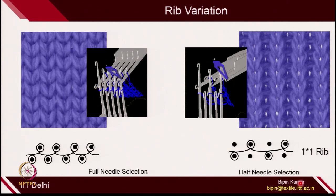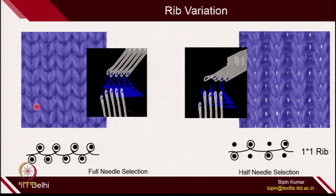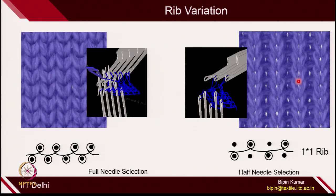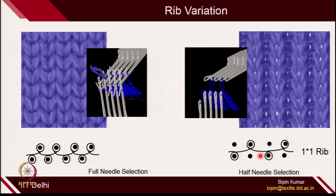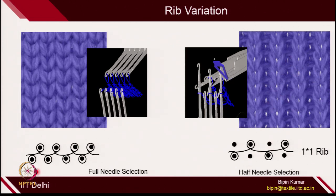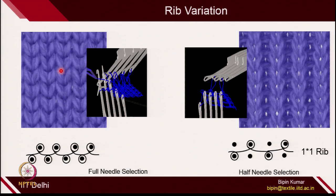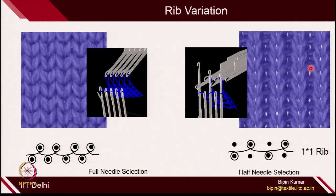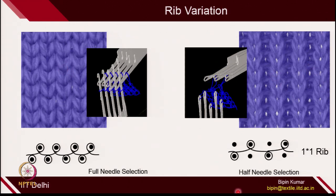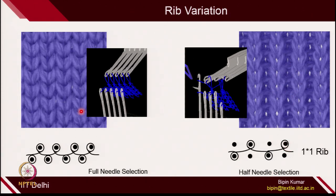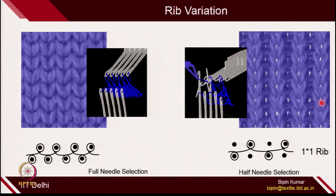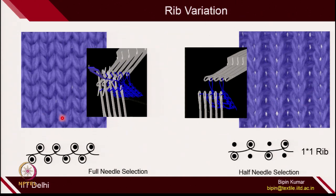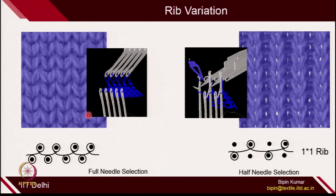In 1×1 rib, half of the needles from both beds have been selected. If you compare the fabric structure, in full needle rib more loops are there so the fabric looks denser. In 1×1 rib you can see small holes are there because the fabric is a little bit porous. Naturally, the permeability of the 1×1 rib fabric will be much more permeable compared to the full needle selection fabric.